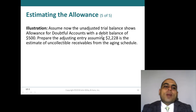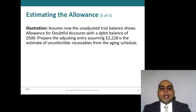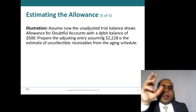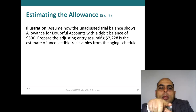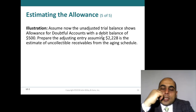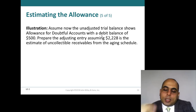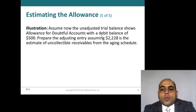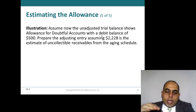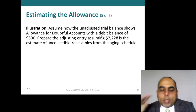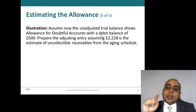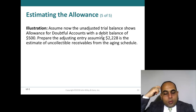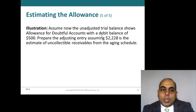Assume now the adjusted trial balance shows allowance for doubtful accounts with a debit balance of $500. This is different — be careful. How can the allowance for doubtful accounts have a debit balance? That is an important question to think about. Prepare the adjusting entry, assuming $2,228 is the estimated uncollectable receivables from the aging schedule. We have a debit balance of $500.